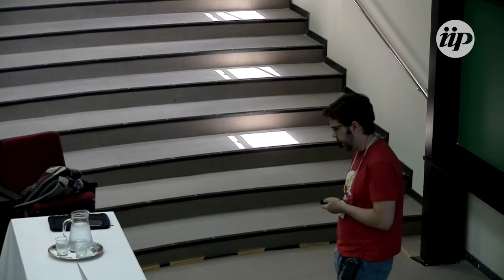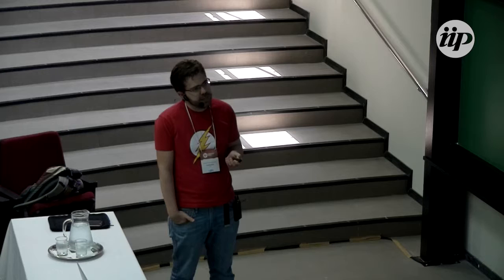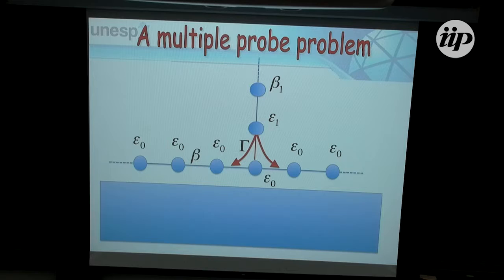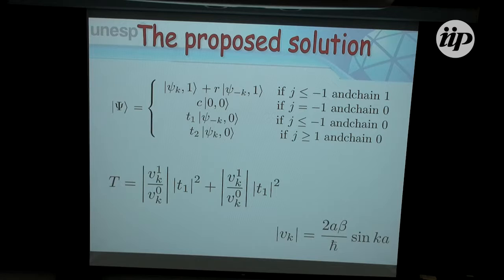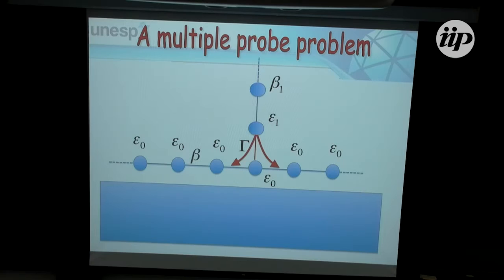Current is going to flow from the tip into the chain, flowing both in this direction and the opposite direction. I can use the same type of scattering approach to understand this problem. It's slightly more complicated because now I have a localized atom in the middle, a semi-infinite chain in one direction, a semi-infinite chain in the other direction, and another semi-infinite chain here. So I have incoming electrons, a reflected part, a transmitted part going one way, another transmitted part going the other way, and a localized state in the middle.